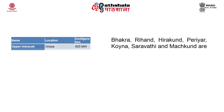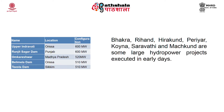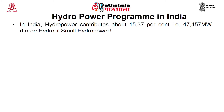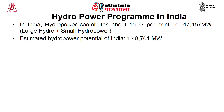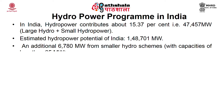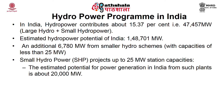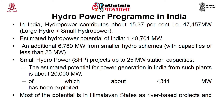Bakra, Rehan, Hirakud, Periyar, Koina, Saravati, and Machkund are some large hydropower projects executed in earlier days in India. Hydropower contributes about 15.37% from large hydro and small hydropower. The estimated hydropower potential of India is 1,48,701 megawatt, with an additional 6,780 megawatt from smaller hydro schemes. Small hydropower projects are up to 25 megawatt capacity, with an estimated potential of 20,000 megawatt, of which only 4,341 megawatt has been harnessed.